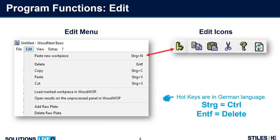In the main Edit menu, we can paste a new workpiece — that's Ctrl+N. We also have an icon for it: the L-shaped arrow icon. We can delete (that's ENTF, just the Delete key on your keyboard). We can still copy and paste: Ctrl+C, Ctrl+V, and Ctrl+X will cut the part out. We still have the standard Windows icons off to the side as well.